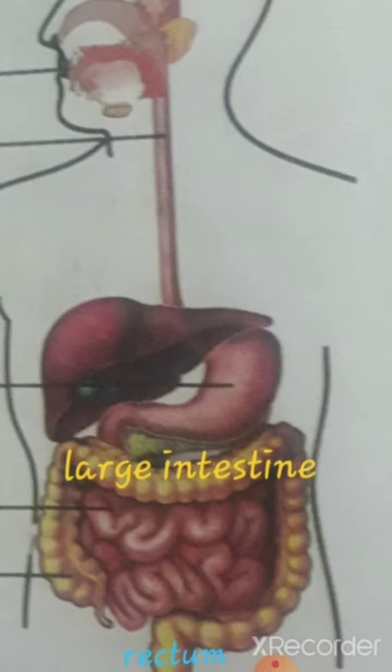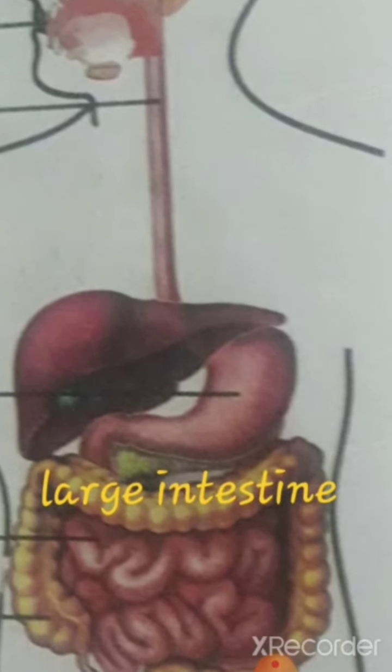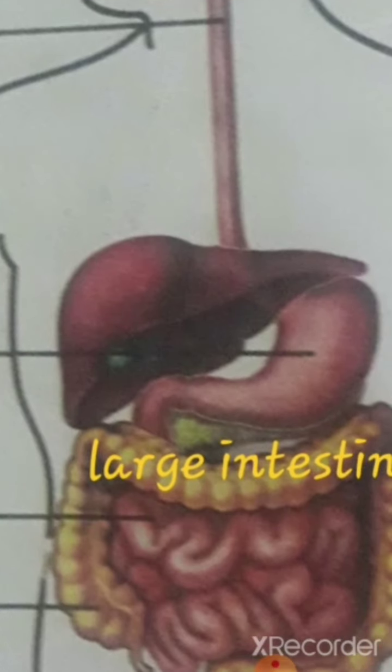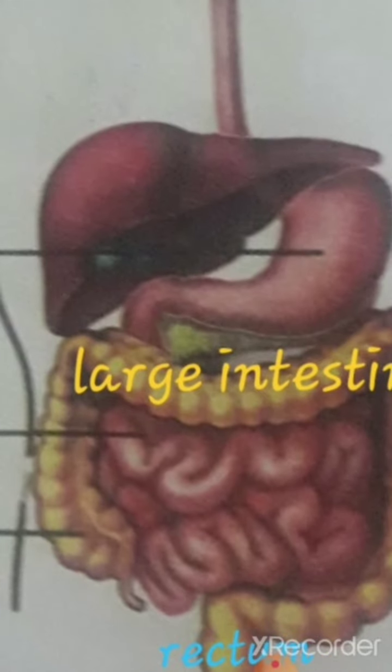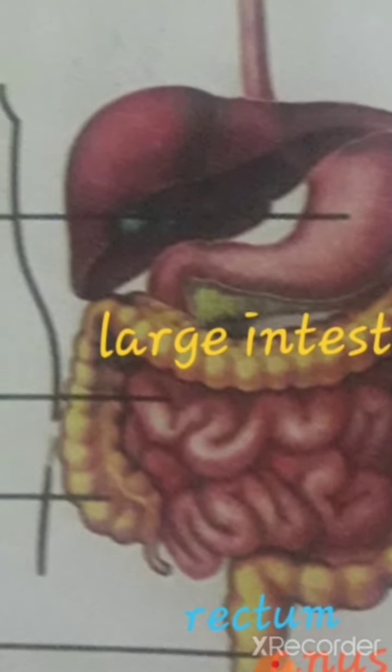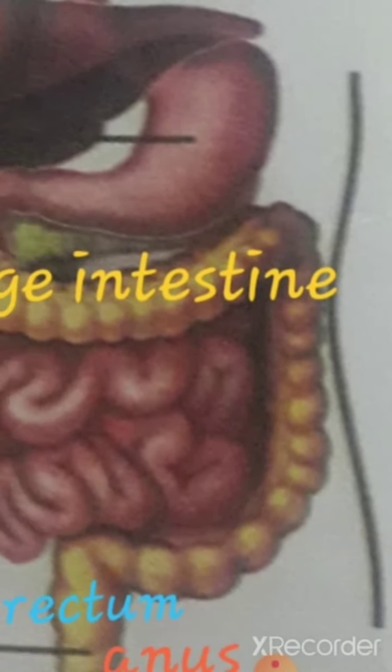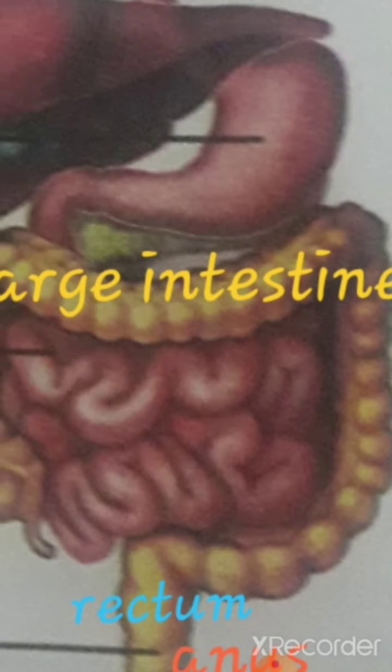This region is called the ascending colon, including the cecum and appendix. Then this region is the transverse colon. And this region is the descending colon. And then the rectum, which leads to the anus.